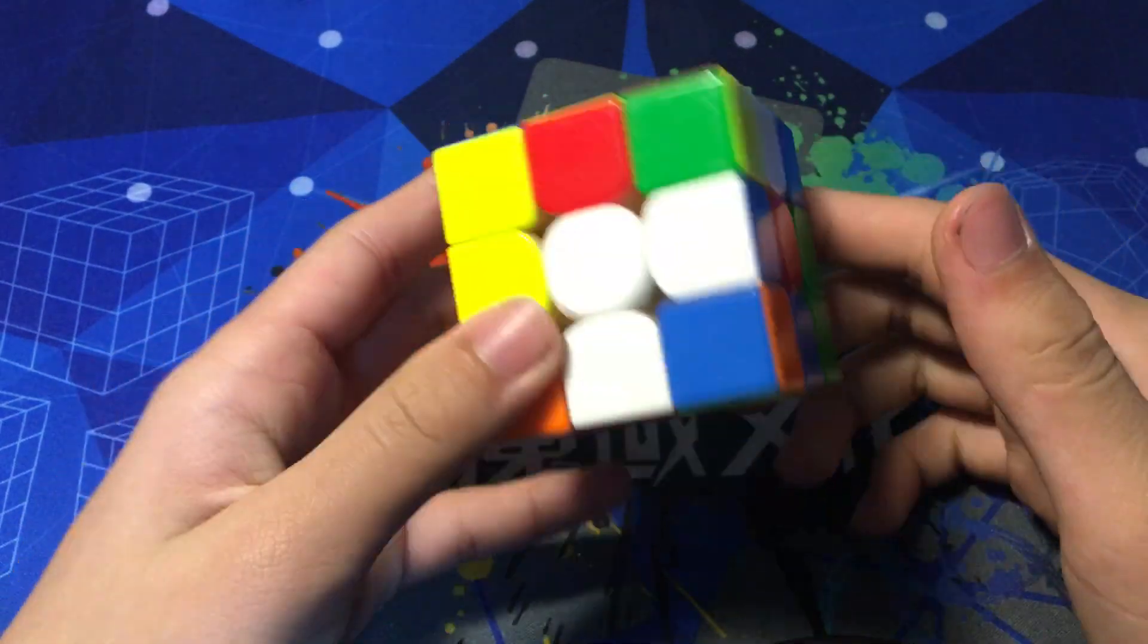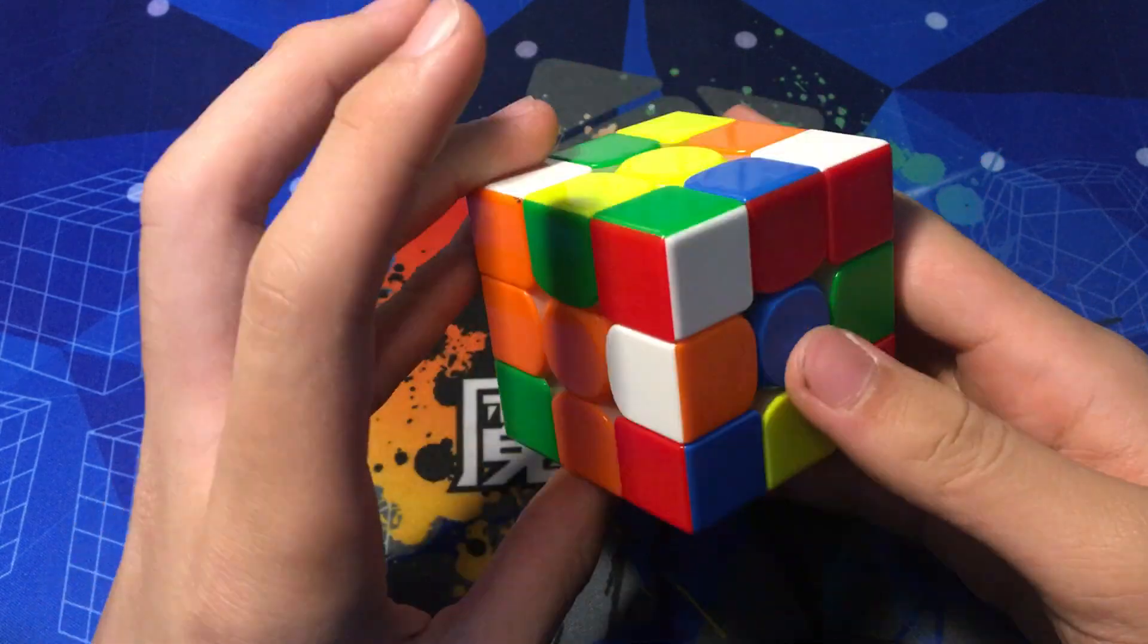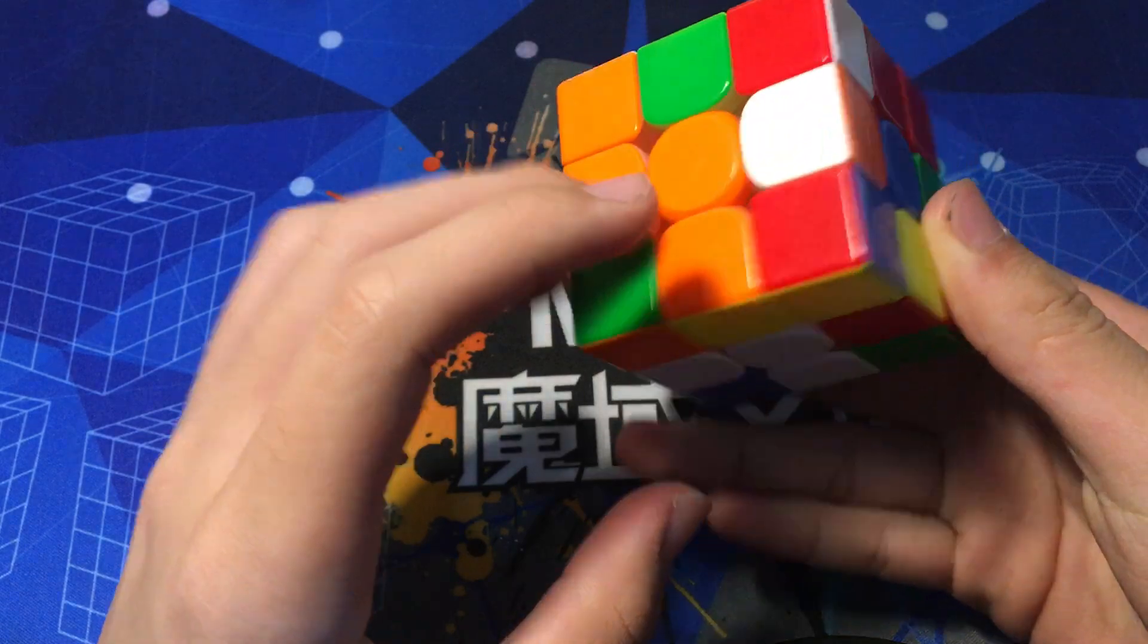Yeheng starts off with a white cross, planning two pairs deep into inspection and quite possibly more, but I will just be telling you how to plan the first two pairs in inspection.